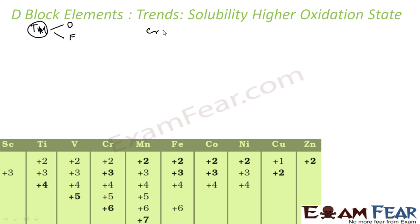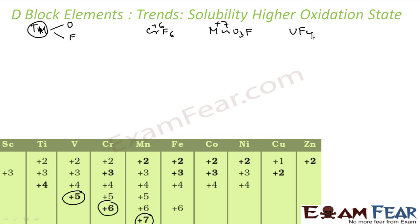For example, CrF6 — here chromium has a plus 6 oxidation state, which occurs with fluorine. For manganese's plus 7 oxidation state, this happens in MnO3F. For vanadium's plus 5 oxidation state, it occurs with VF5, again with fluorine.